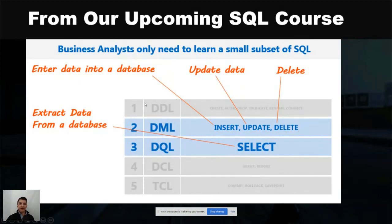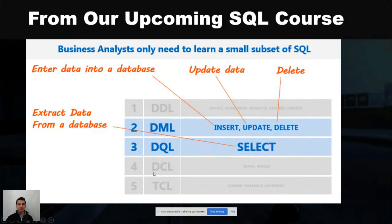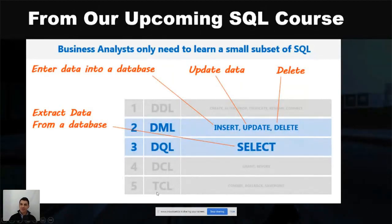The Data Definition Language is typically strictly a developer's realm — developers are the ones who handle the creation of the database structure. The Data Control Language is typically reserved for systems administrators; even developers often don't use DCL. This is for people who maintain databases on an ongoing basis and control permissions on who can access what inside the database. Category five can be used by both admins and developers, but analysts very rarely, if ever, need to use that area of SQL.